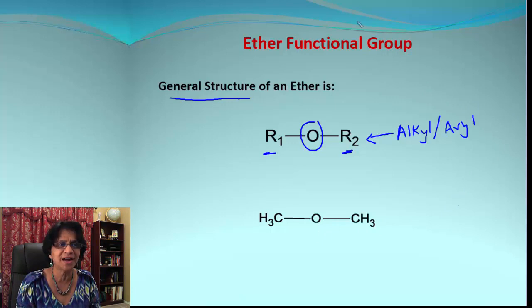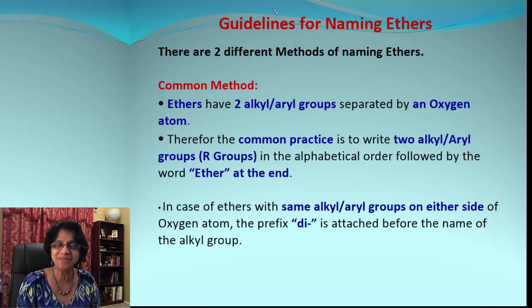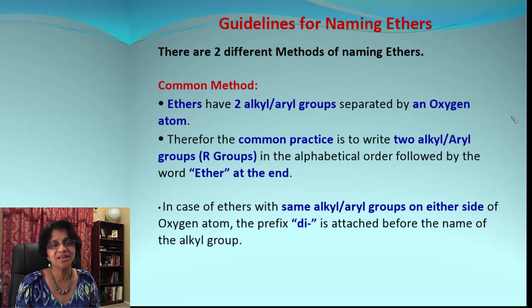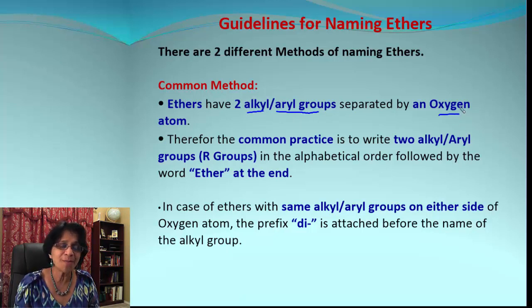Now let's find out how we name these ethers. There are two different methods by which we can name ethers. One of those methods is a pretty common method, so let's go through that. As you know, ethers have two alkyl or aryl groups and they're separated by one single oxygen atom.